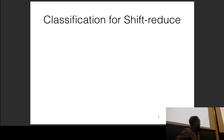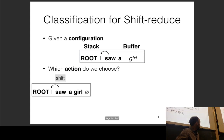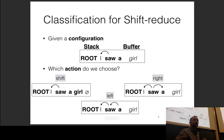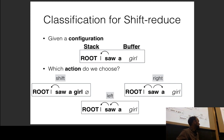This is a classification problem: given the configuration — the current state of the stack and buffer — we take an action: shift, reduce-left, or reduce-right. So it's a three-class classification problem, and what we need to do is take in this complicated data structure and use whatever information we have to make the correct prediction.